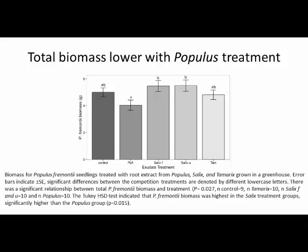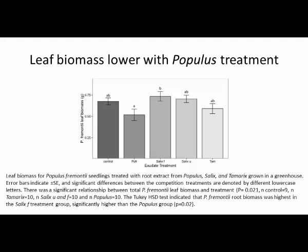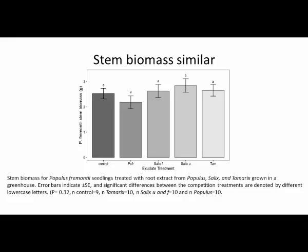From our greenhouse experiment — where Populus seedlings were treated with different root extracts — none of the treatment groups were significantly different from the control. However, there appeared to be a negative effect of treating Populus with Populus root extract, meaning those seedlings grew less. Interestingly, the two species involved in our proposed facilitation — Populus and Salix — were the ones showing the most difference in the greenhouse, though this is not definitive. It may indicate some below-ground interaction, and we found similar patterns for root biomass and leaf biomass.